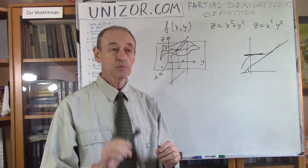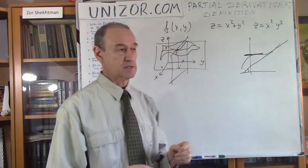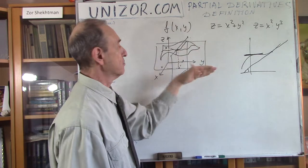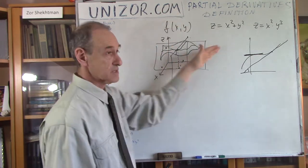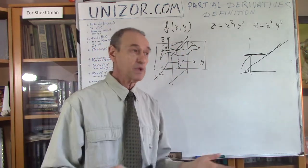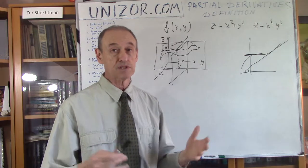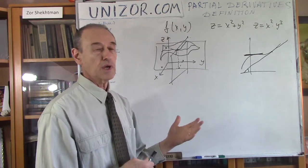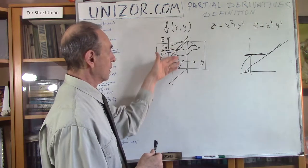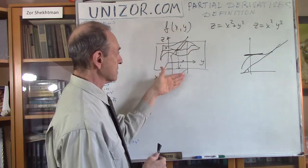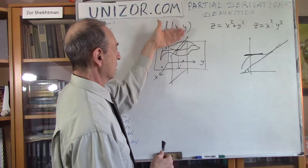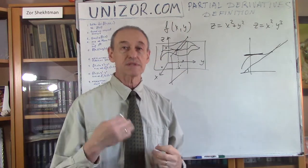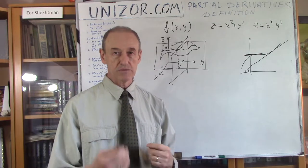In some way, these two curves do describe the steepness of the surface — not completely, but to a certain extent. Because if both curves are very steep, we can assume the whole surface is relatively steep. So the derivative of each curve within its respective plane does describe, to a certain extent, the behavior of the surface itself.